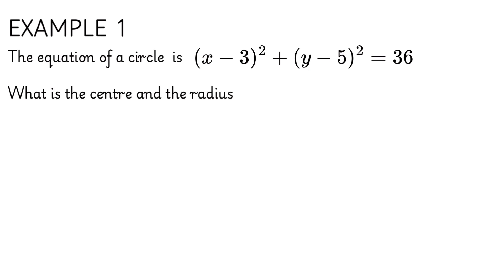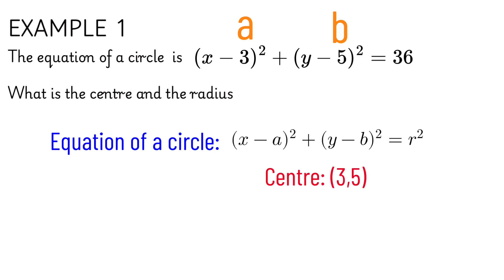Here's a simple one which is asking us to find the center and the radius of the circle. If we compare this to the equation of a circle then A would be equal to 3 and B would be equal to 5 which means the center of this circle would be 3,5.